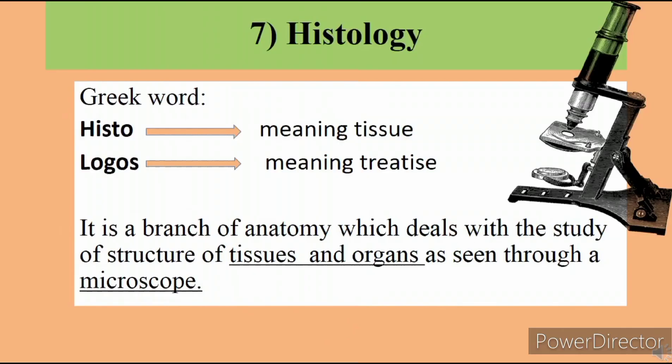The seventh branch of human anatomy is histology. Histology is derived from the Greek words 'histo' and 'logos'. Histo means tissues or microscope, and logos means science or treatise. The study carried out with the help of a microscope is called histology.